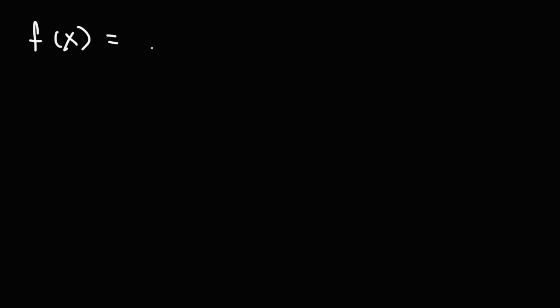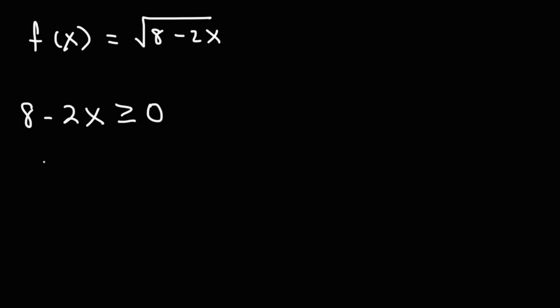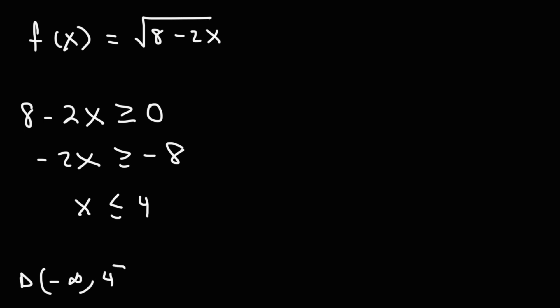Now let's consider another example. Let's say f of x is equal to the square root of 8 minus 2x. Go ahead and find the domain of the inverse function. Let's focus on the regular function first. We know that the inside part has to be equal to or greater than 0. Subtracting both sides by 8, we get this. Then if we divide by negative 2, negative 8 divided by negative 2 is positive 4. Since we're dividing by a negative number, we need to change the direction of the inequality. So the domain for f is negative infinity to 4, with 4 being included.